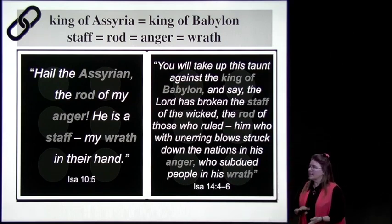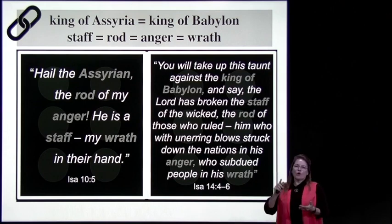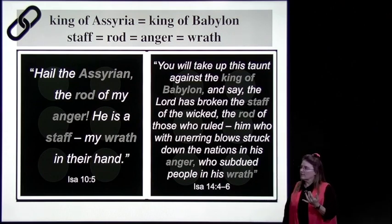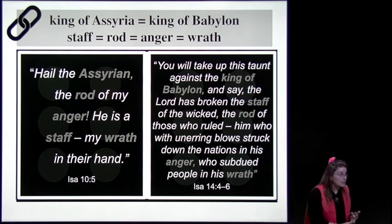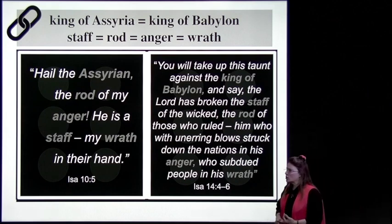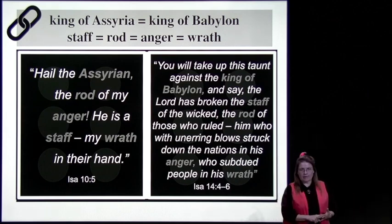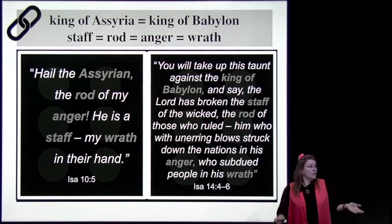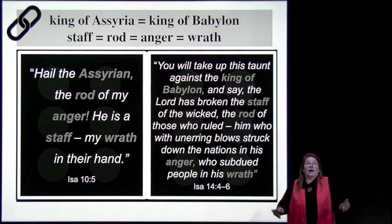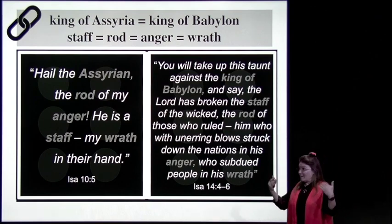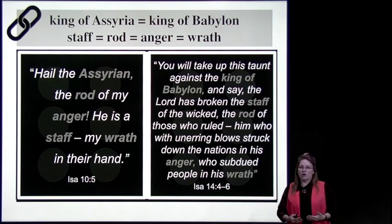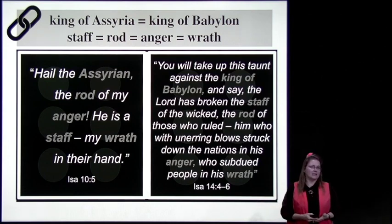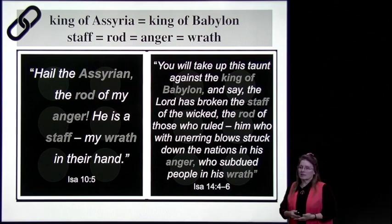'You will take up this taunt against the king of Babylon and say, the Lord has broken the staff of the wicked, the rod of those who ruled—him who with unerring blows struck down the nations in his anger, who subdued people in his wrath.' We learn so many things from this. For one, we learn that when the scriptures talk about God's wrath in the last days, it's not an angry God smashing everybody—it's a just, loving God who allows us our choice. And we choose this guy.